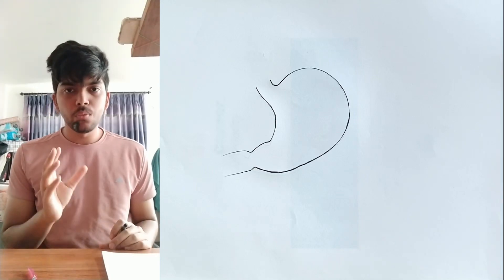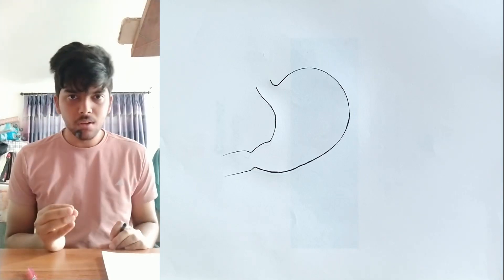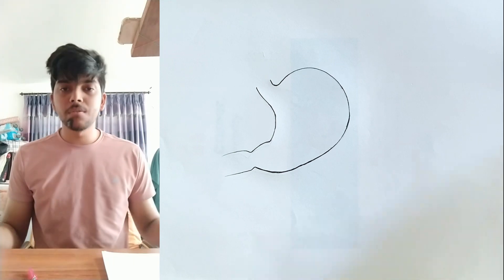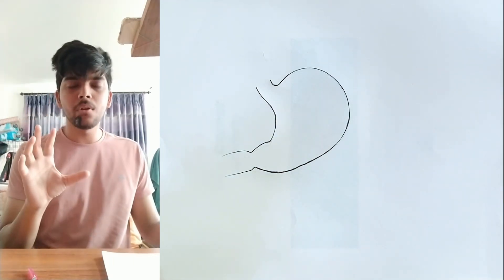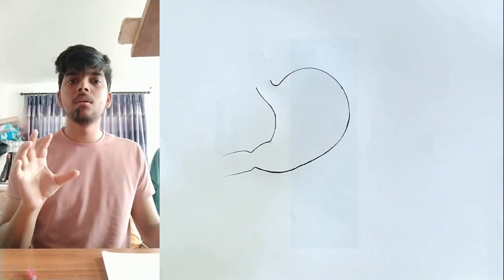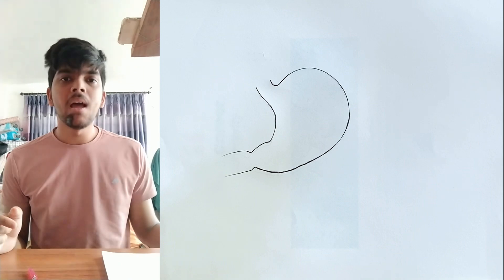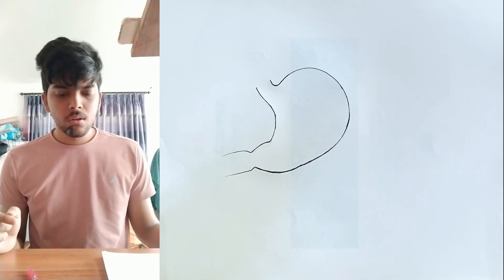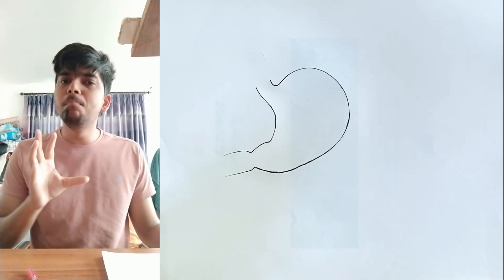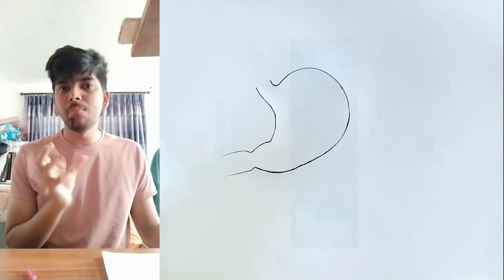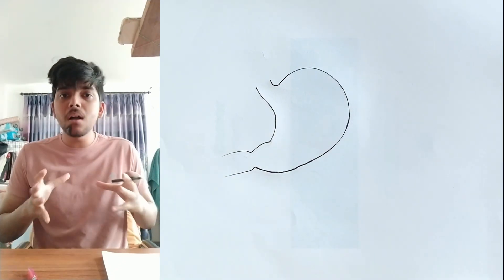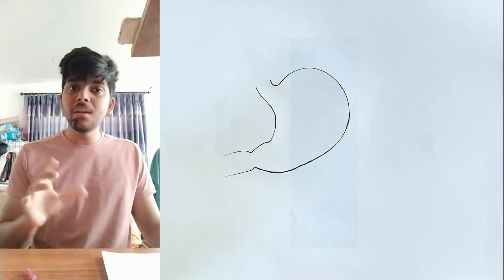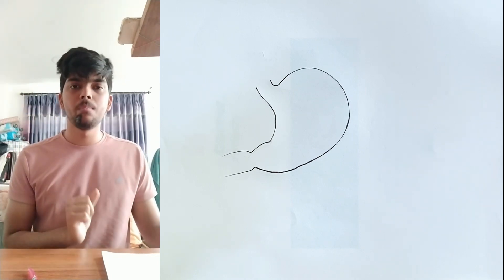In the previous video, we dealt with esophagus. Now it's a turn for the other part of the alimentary canal that comes right after esophagus, and that is your stomach. Stomach forms the bag of the alimentary canal. It is the widest part of the alimentary canal that is present between esophagus and duodenum.